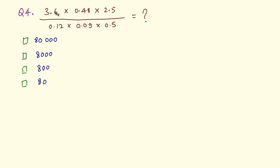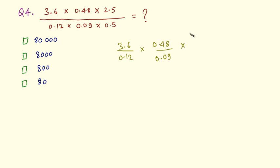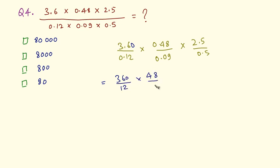Question 4 — this one's quite simple. We have 3.6 into 0.48 into 2.5 divided by a lot of numbers. We can split them: 3.6 by 0.12 into 0.48 upon 0.09 multiplied by 2.5 upon 0.5. Adding a zero so the number of decimal digits match, we can write this as 360 divided by 12, into 48 divided by 9, into 25 divided by 5.